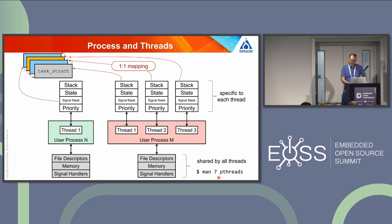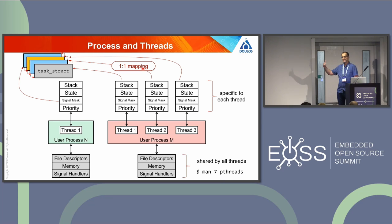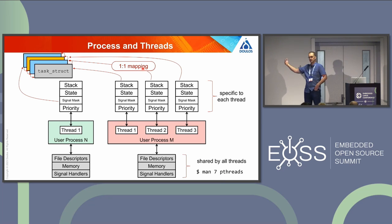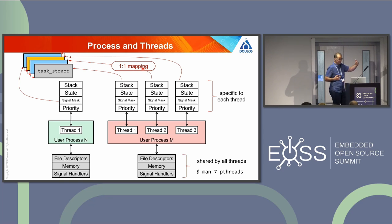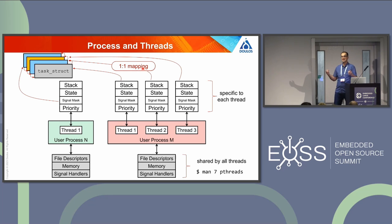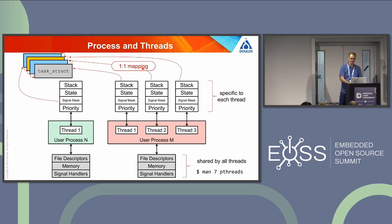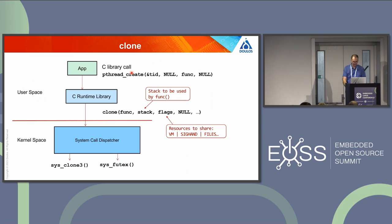On Linux, there is a one-to-one mapping between the Linux system thread and the corresponding kernel task struct. So the Linux kernel only sees tasks, and the scheduler will schedule your thread accordingly.